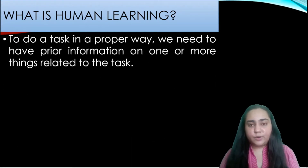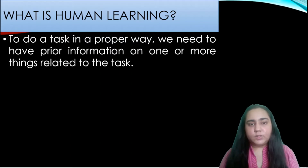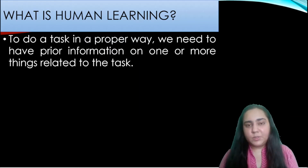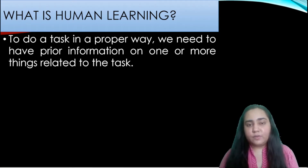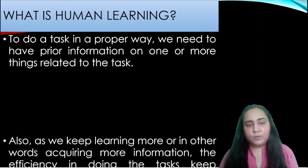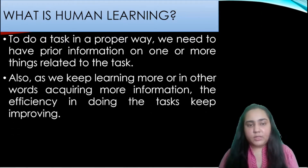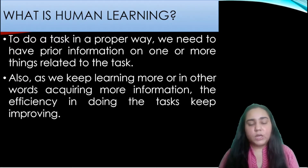To do a task in a proper way, we need to have prior information on one or more things related to the task. It's very important to know how the task is to be done, and we need to have some extra information about that task to be able to do it properly. And as we keep learning more, or in other words as we keep getting more information, our efficiency keeps improving.